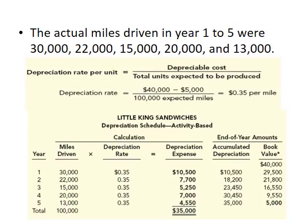The last method is the activity-based method. Assume actual miles driven in years one through five were 30,000, 22,000, 15,000, 20,000, and 13,000 miles. Step one: calculate the depreciation rate per unit. Depreciable cost is $40,000 − $5,000 = $35,000. We estimate the truck will be driven 100,000 miles total, so $35,000 ÷ 100,000 miles = $0.35 per mile. For each mile driven, we depreciate by $0.35.